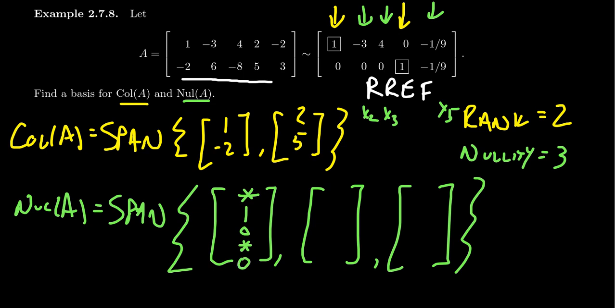Now the second one, the second vector, we're going to do this for x3. So we get a star for the dependent variable, 0 for x2, 1 for x3, star for x4, and then 0 for x5. And then the last vector is going to correspond to the free variable x5.